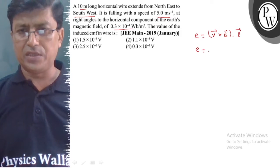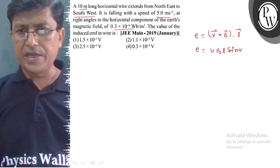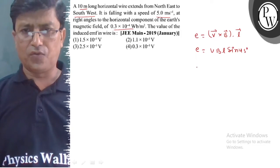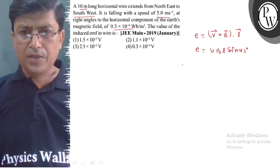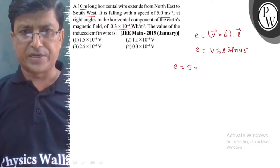Now, if we put values here, we have 5 meter per second. Magnetic field is 0.3 × 10^-4 weber per meter square.